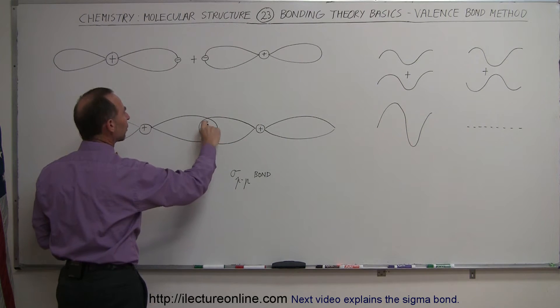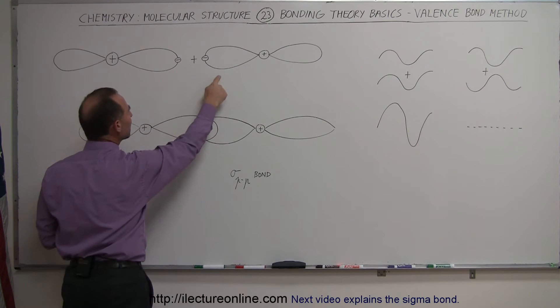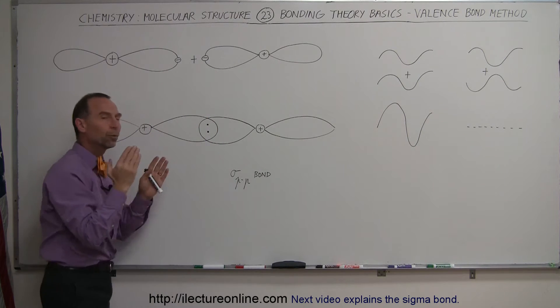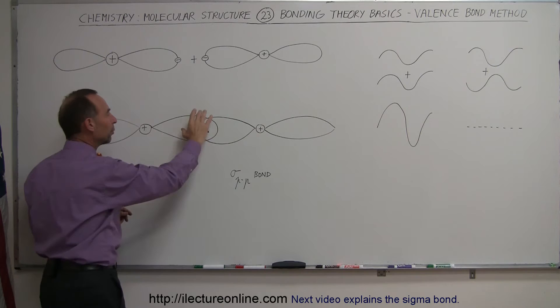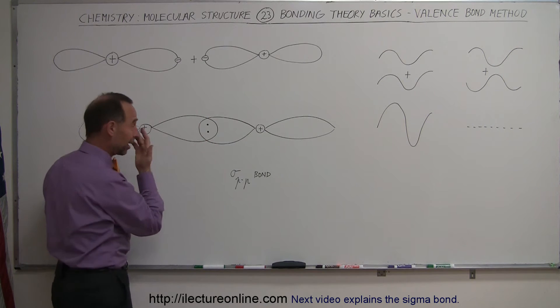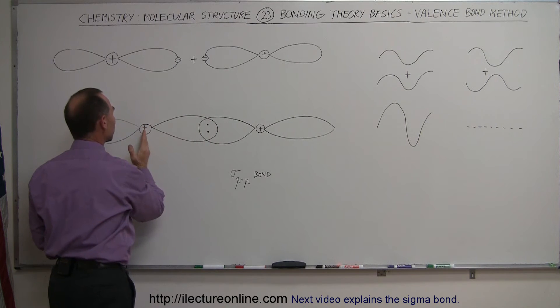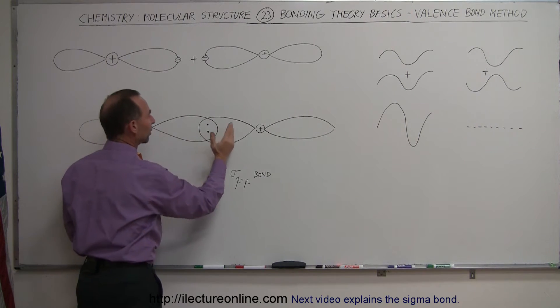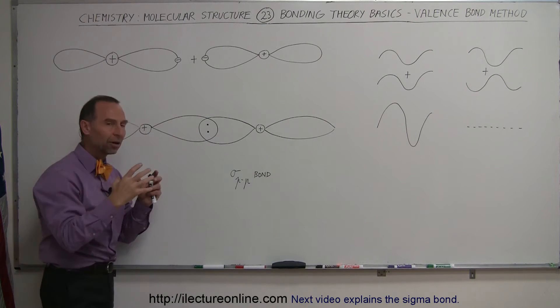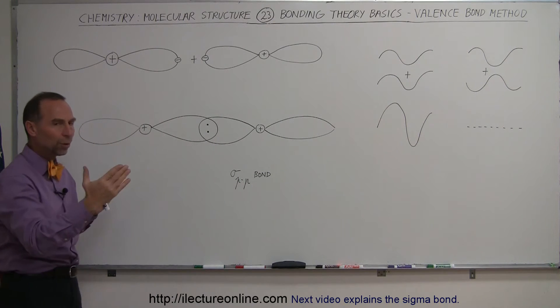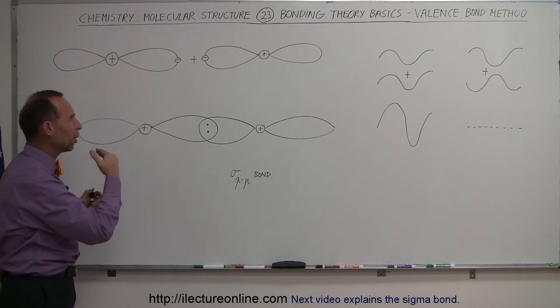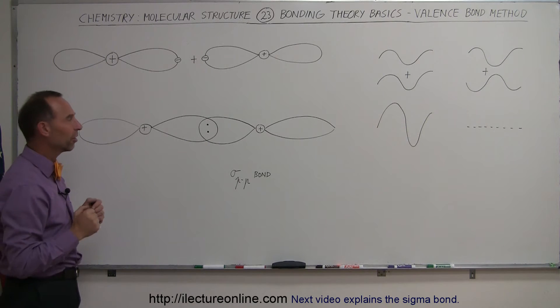we end up with a region right here where the two electrons, one from each orbital, one from each atom, can reside most of the time within that region or a greater percentage of the time and therefore form an electronegative region right here which then would attract to this nucleus for this atom and then would attract this nucleus from that atom and because of that it forms that strong bond and again the distance between them would be determined by where the lowest energy state would exist.